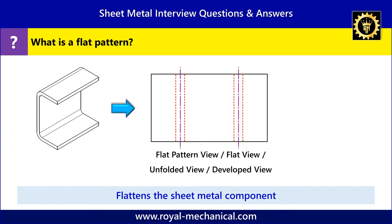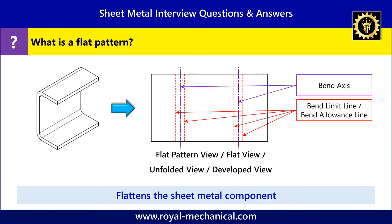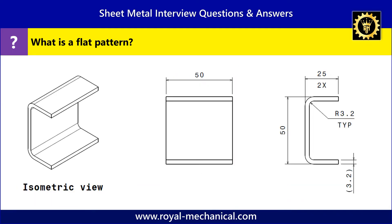The unfolded view unbends all the bends and flattens the sheet metal component. This view also generates the bend axis and bend allowance or bend limits lines. This unfolded view is very much essential for manufacturing sheet metal components.